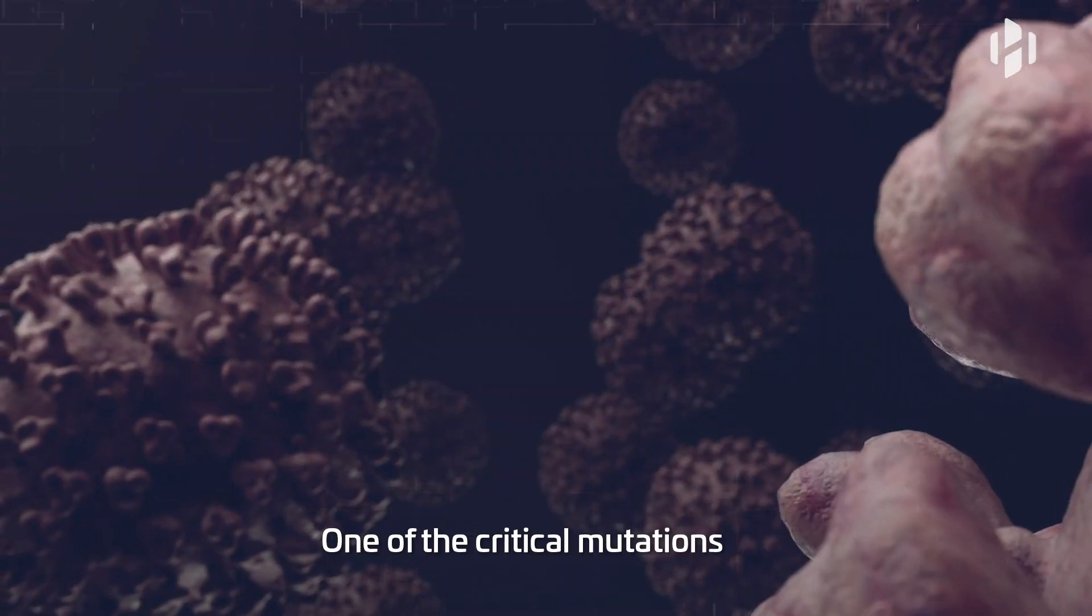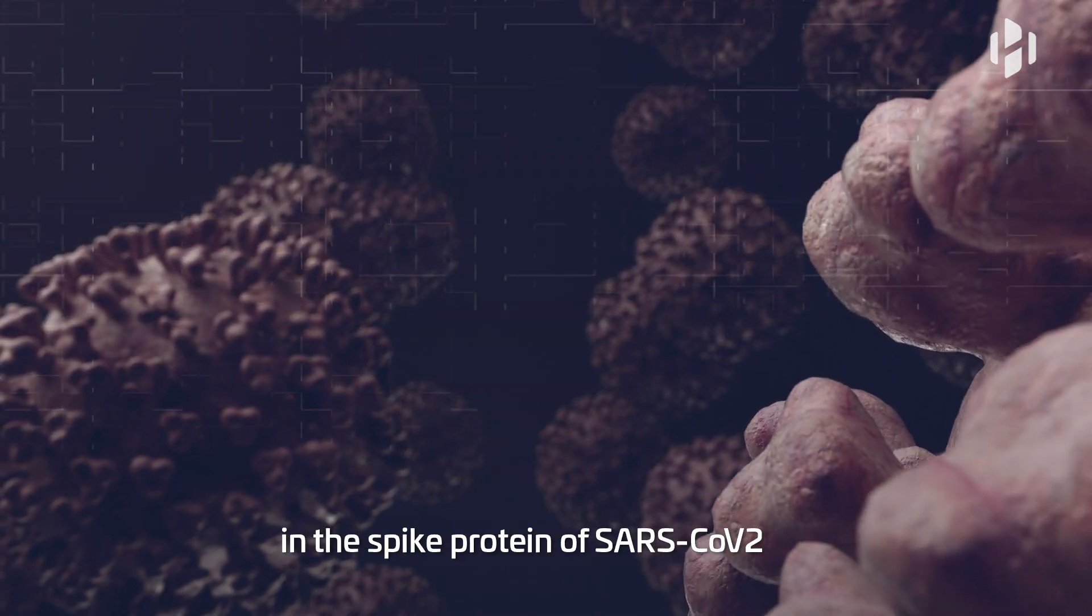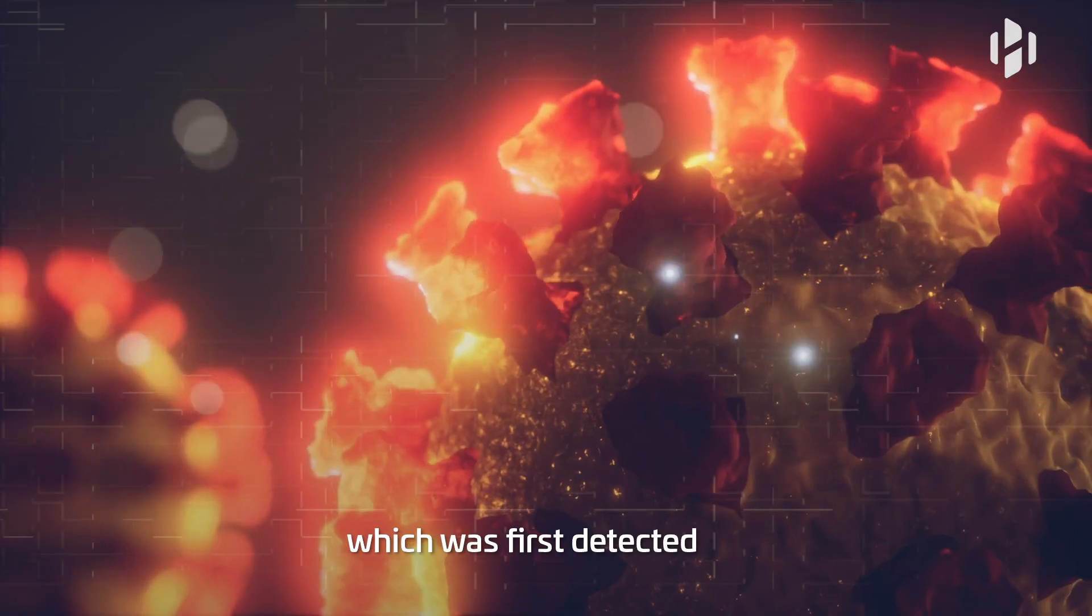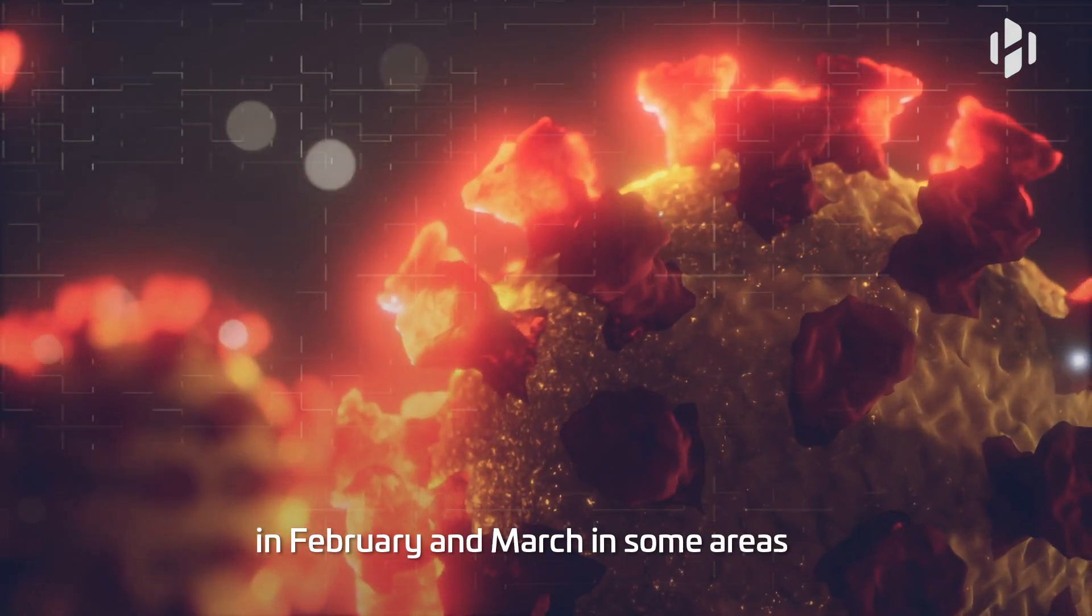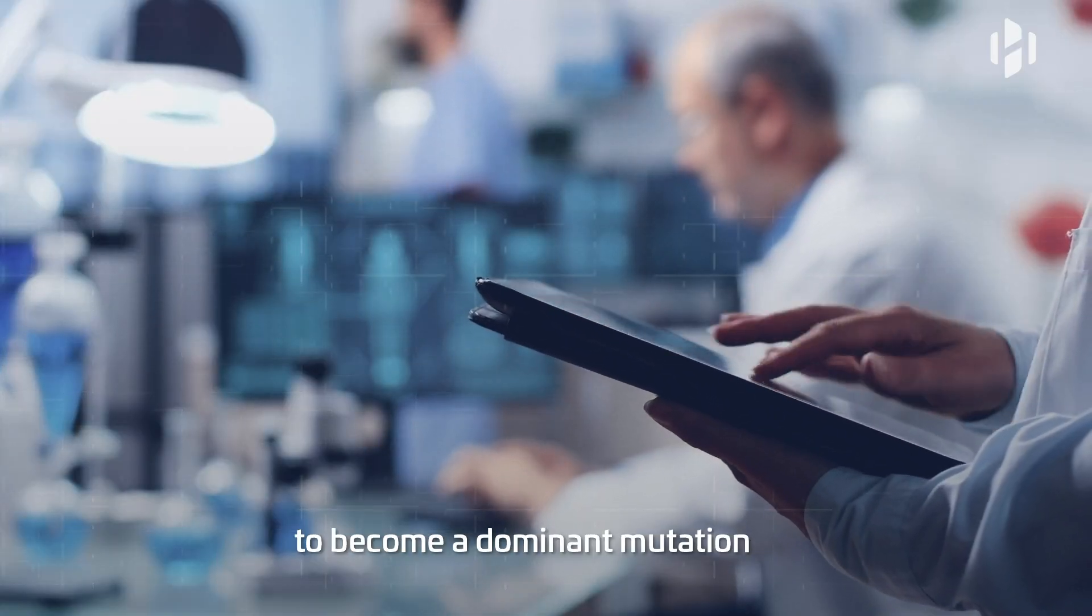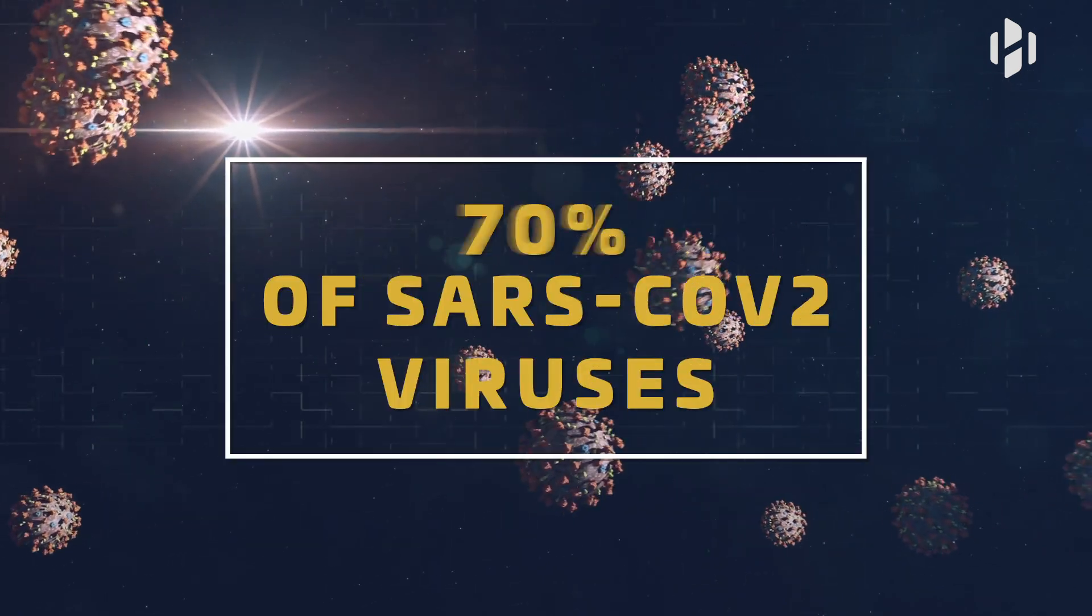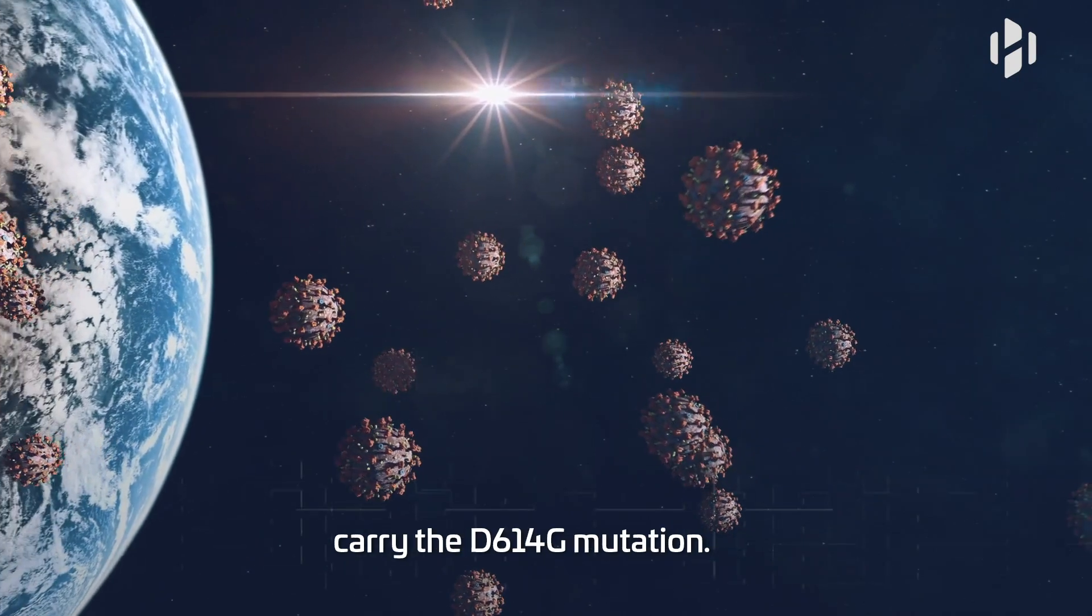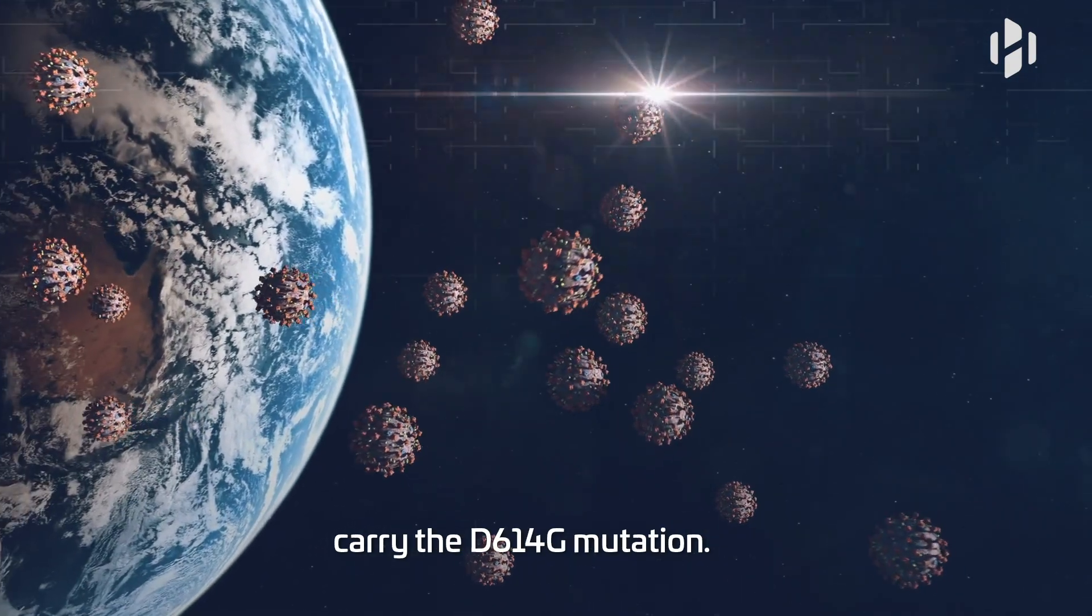One of the critical mutations in the spike protein of SARS-CoV-2 is called D614G, which was first detected in February and March in some areas, but then quickly spread to become a dominant mutation of the virus.